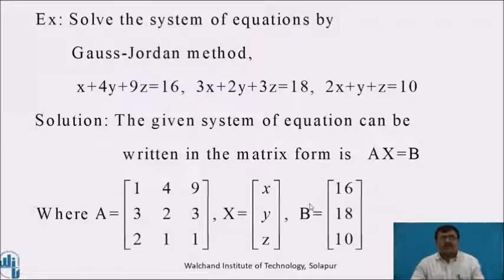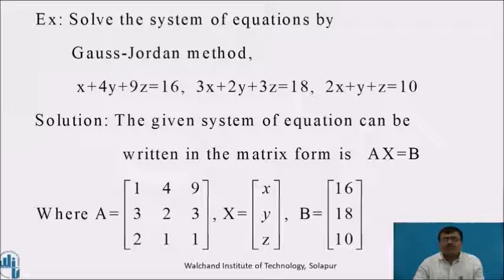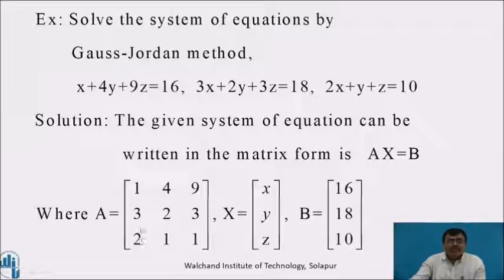Now coming to an example: solve the system of equations by the Gauss-Jordan method. That is: x + 4y + 9z = 16, 3x + 2y + 3z = 18, 2x + y + z = 10. The given system can be written in matrix form Ax = b, where A = [1, 4, 9; 3, 2, 3; 2, 1, 1], x = [x, y, z], and b = [16, 18, 10].